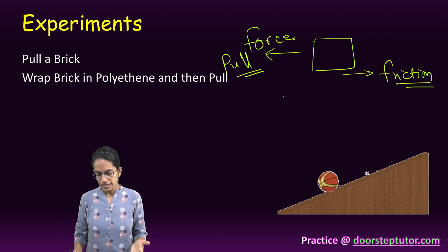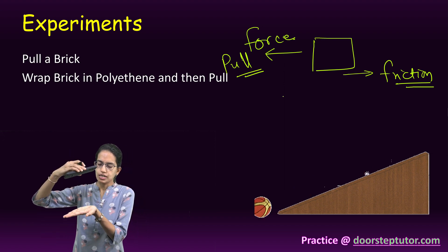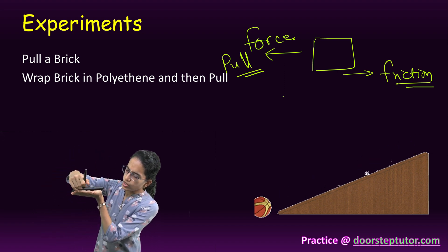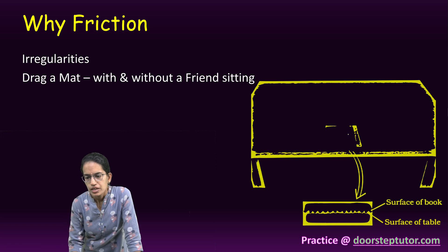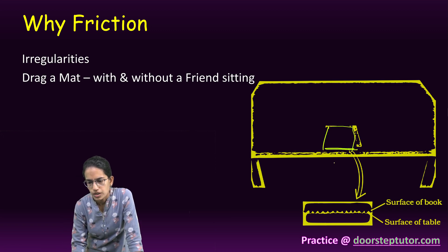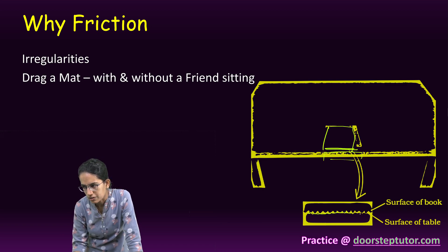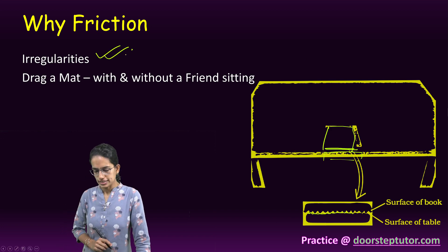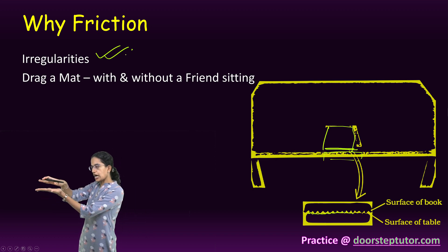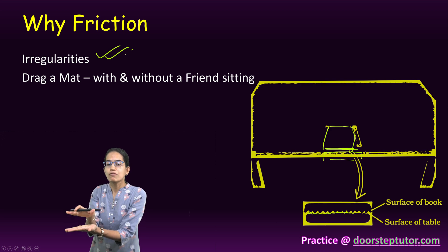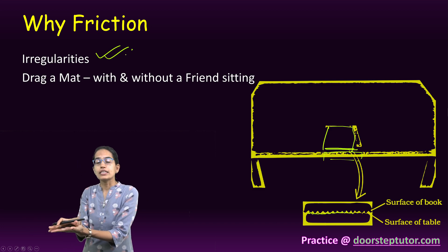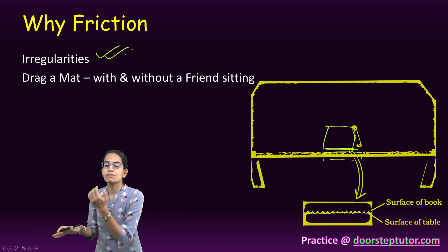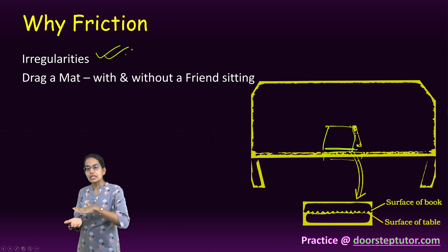Friction can be demonstrated because of irregularities. Let's say I have a mobile phone and keep it on the surface — there are small irregularities present on both surfaces. In this diagram, a book is on a table, and the contact surface between the book and the table has a number of irregularities. Friction is caused by these irregularities, which resist or oppose the motion.